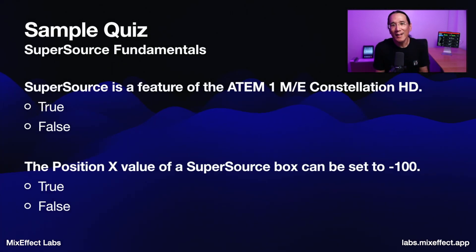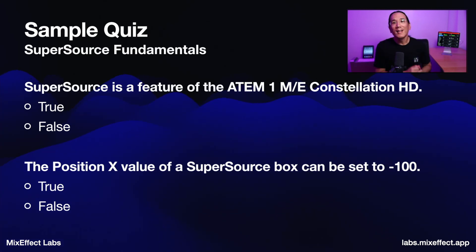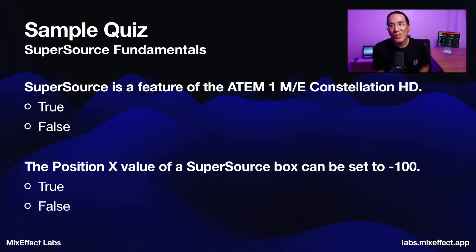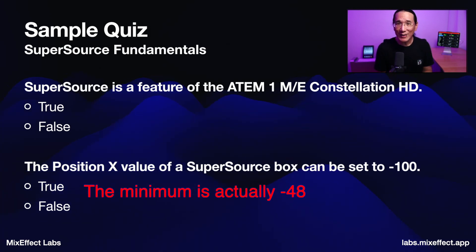I also have quizzes. Let's take one right now. True or false: SuperSource is a feature of the 1ME Constellation HD switcher? The answer is false — the 2ME and 4ME have SuperSource, but the 1ME does not. Second question: can the position X value of a SuperSource box be set to minus 100? The answer is also false — it's either minus 16 or minus 32; I'll have to look at the lesson to remember the exact value.